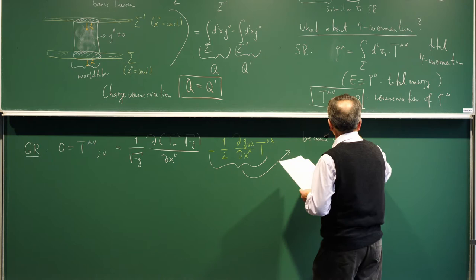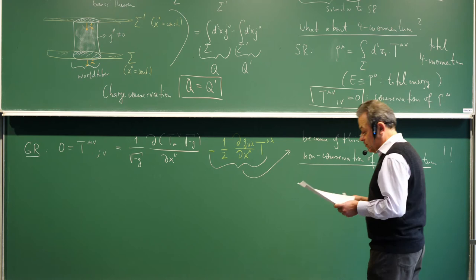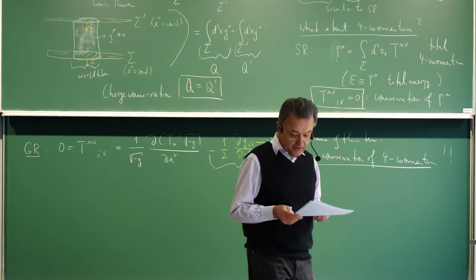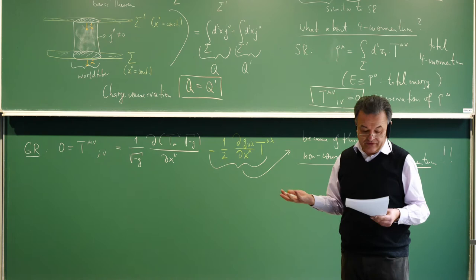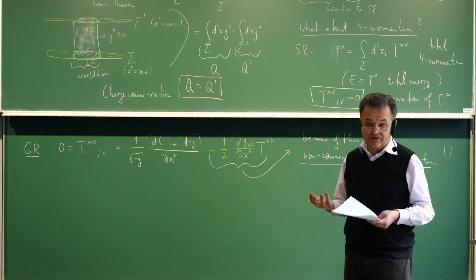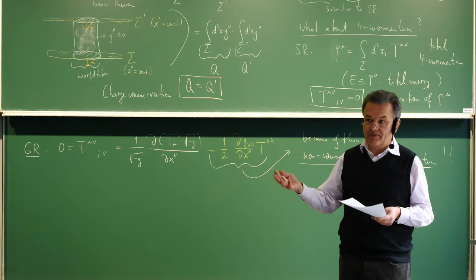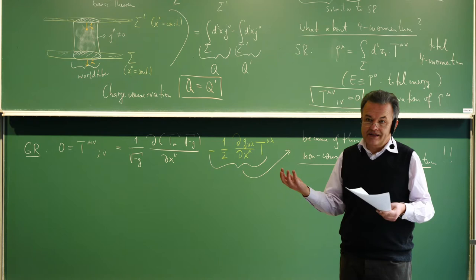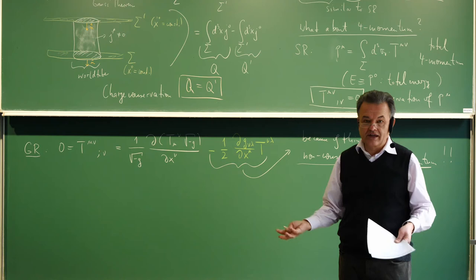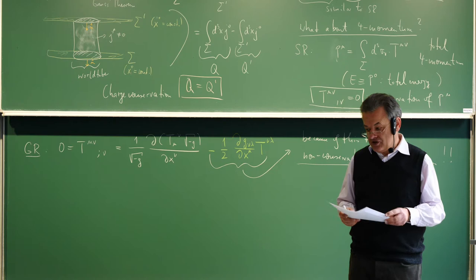Because of this extra term, we have non-conservation of four-momentum. The reason is that if you have a gravitational field, the matter four-momentum is not conserved by itself — this is already the case in the Newtonian limit. Can we add an appropriate contribution from gravity to obtain a total momentum of matter and gravity? Unfortunately this is not possible because of the equivalence principle: if you had an energy-momentum tensor of the gravitational field, you would have a contradiction, because locally you can always transform the gravitational field away, so you cannot attribute a well-defined local energy-momentum tensor to gravity.